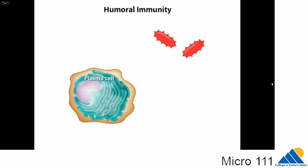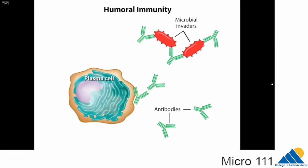Humoral immunity is a type of adaptive immunity in which antibodies are produced to directly target microbial invaders. The antibodies are produced and released by plasma cells that developed from antigen-specific B-cells. The antibodies attach to antigens on the microbes. An antigen is any molecule that, when introduced to a person, elicits the synthesis of antibodies that specifically bind the antigen. To understand B-cell activation and antibody production, a few backstories are necessary.